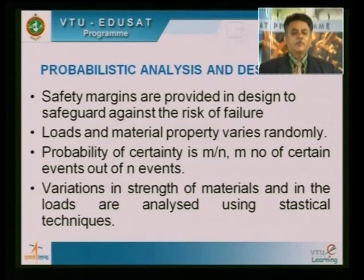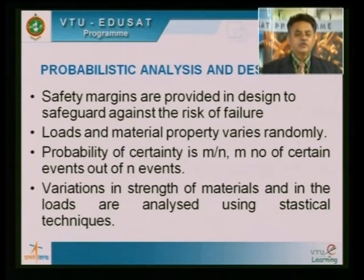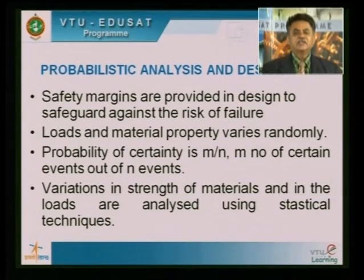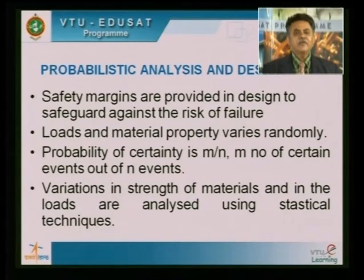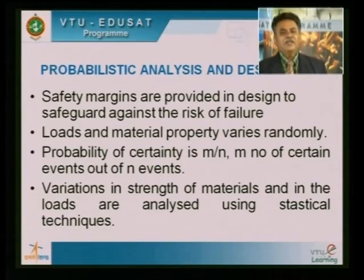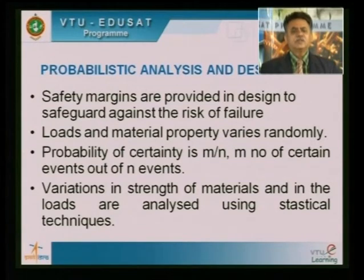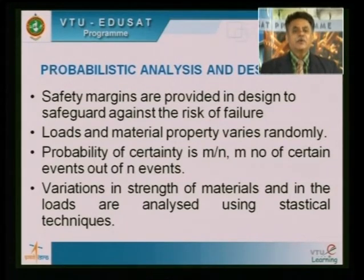Loads and material properties vary randomly, as I have already told you. The probability of a certainty is m divided by n, where m is the number of certain events happening out of n events. For example, out of 100 beams cast, at least 95 percent have got a particular strength — that is the probability.